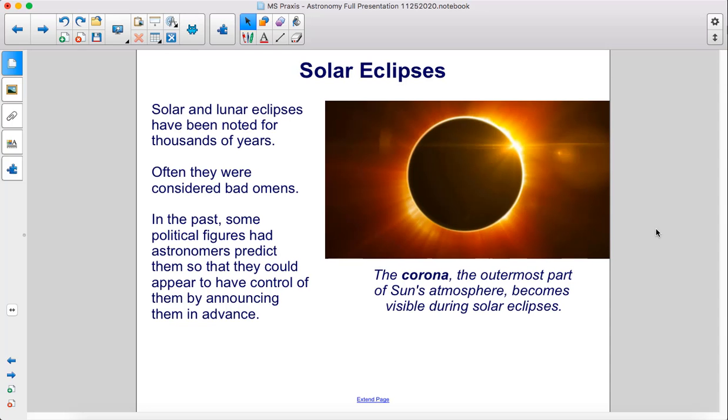Eclipses. Solar and lunar eclipses have been noted for thousands of years. Often they were considered bad omens.